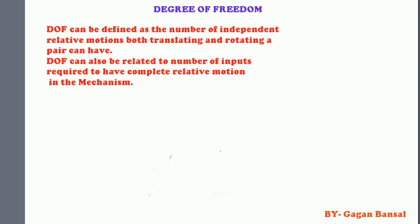Hello everyone. Today's topic is degrees of freedom. Till now we studied what is a link, what is a kinematic pair, what is a kinematic chain, what is a mechanism, and what is a machine. Coming to degrees of freedom, it can be defined as the number of independent relative motions — both translating and rotating — a pair can have. It can also be defined as the number of inputs required to have complete relative motion in the mechanism.